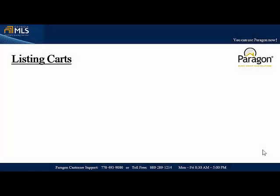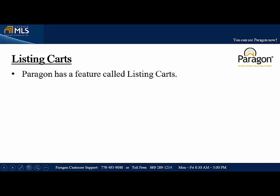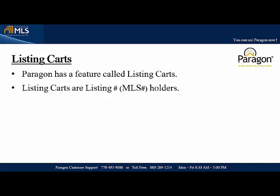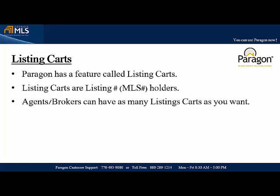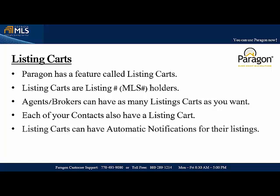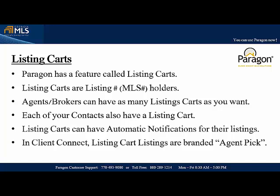This video looks at listing cart functionality in Paragon. Paragon has a feature called listing cards — a listing number or MLS number holder. Agents and brokers can have an unlimited number of listing cards. Each of your contacts has a listing cart in Paragon automatically. Listing carts can have automatic notification setup for the listings inside, and in Client Connect the listing cart listings are branded agent-picked.